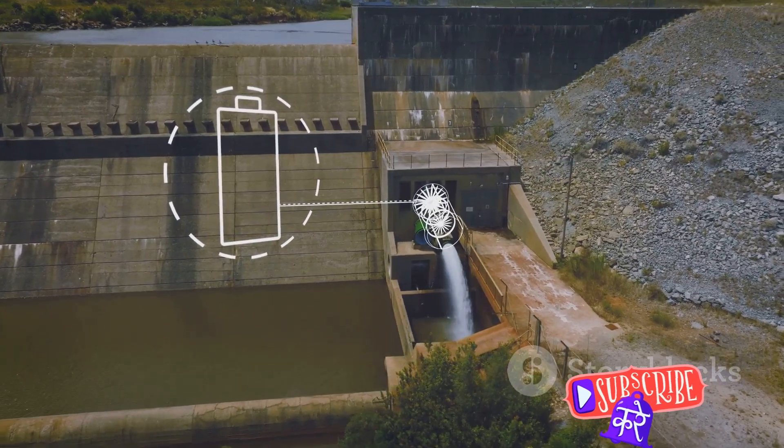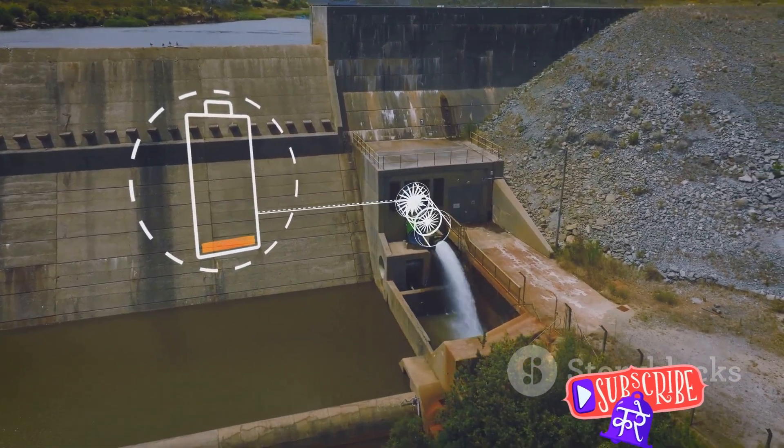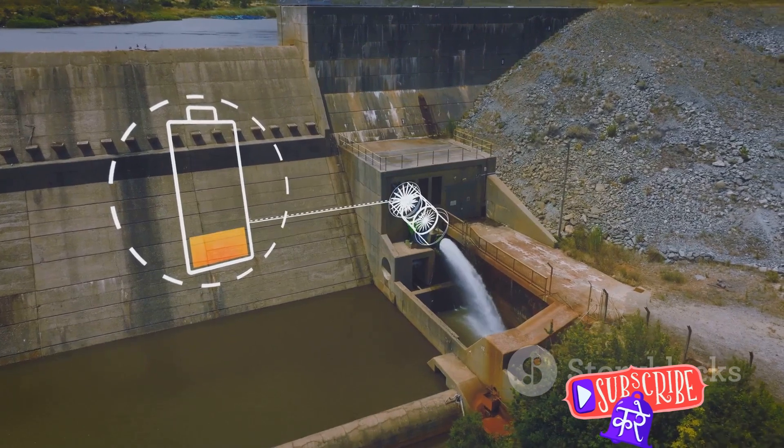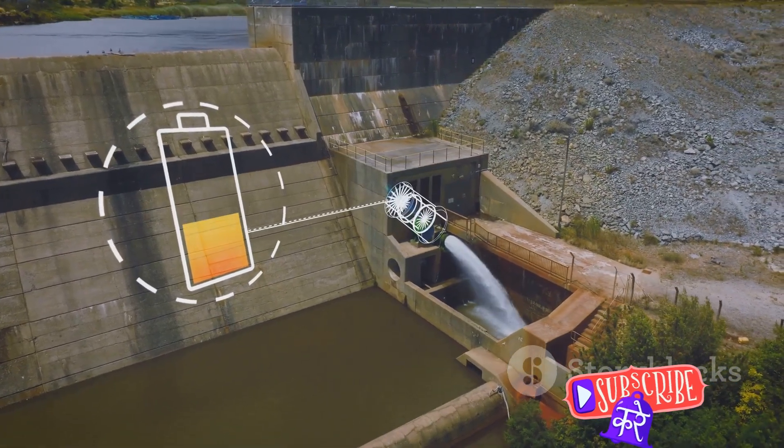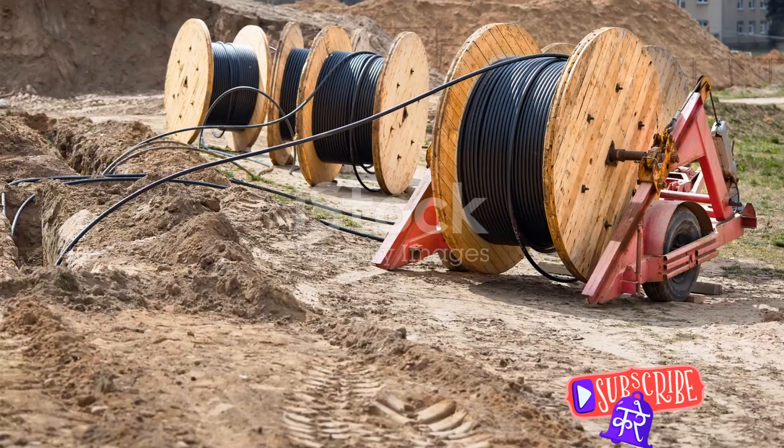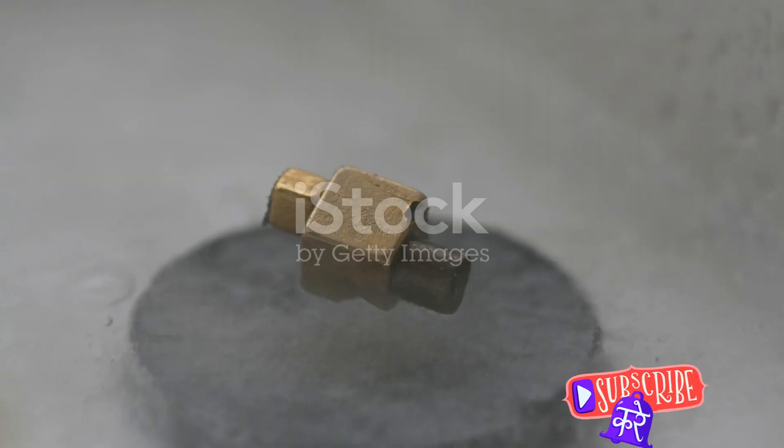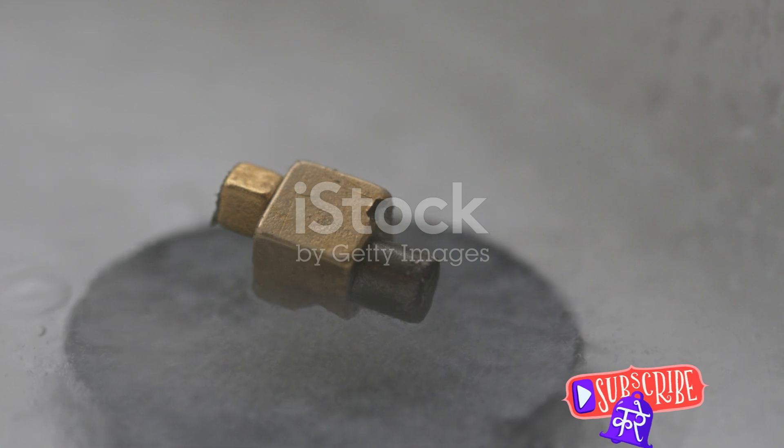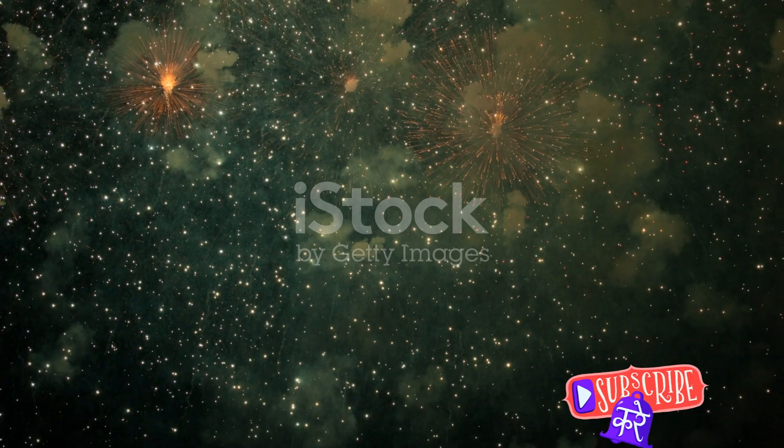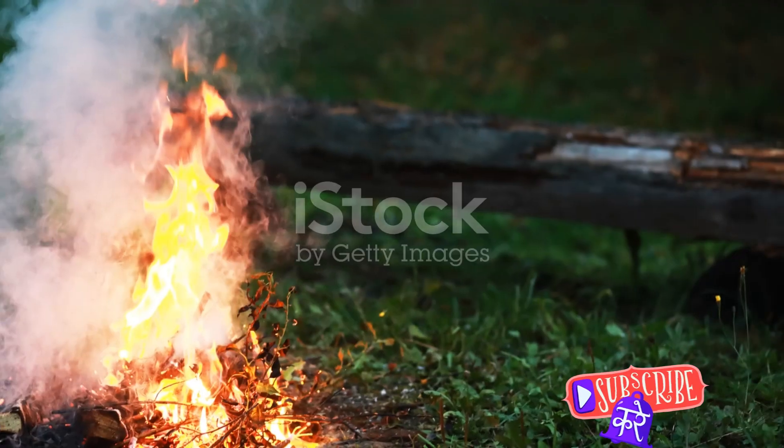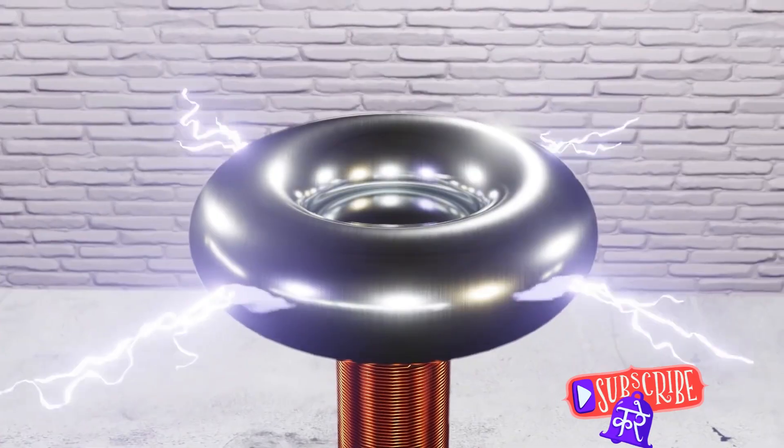It's like a dam holding back water until it reaches a certain level, then releasing it all at once. The spark that jumps across the gap is not just for show. It signifies the moment when all that stored energy is released, sending a powerful surge of electricity into the secondary coil. This sudden influx of energy is what gives the Tesla coil its ability to produce those spectacular sparks we all know and love.